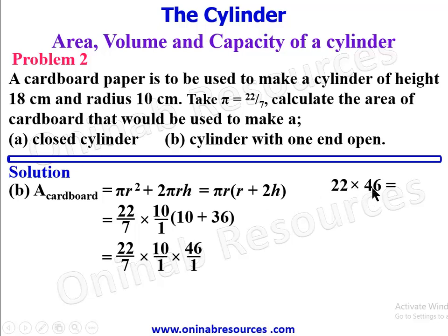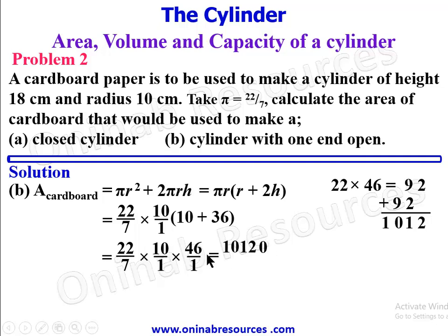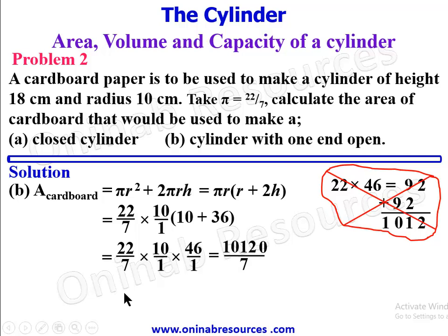Calculating 22 × 10 × 46 ÷ 7: 22 × 46 = 1012, times 10 gives 10120, divided by 7 gives approximately 1445 5/7 cm². This is the area of cardboard paper used to make a cylinder with one end open.